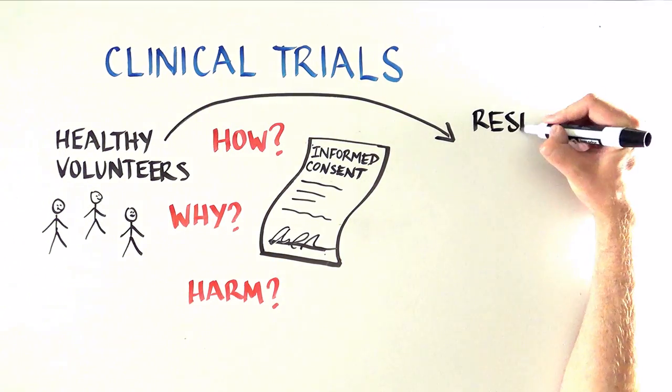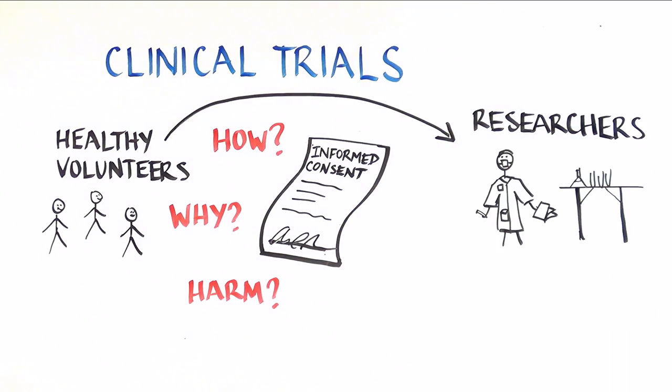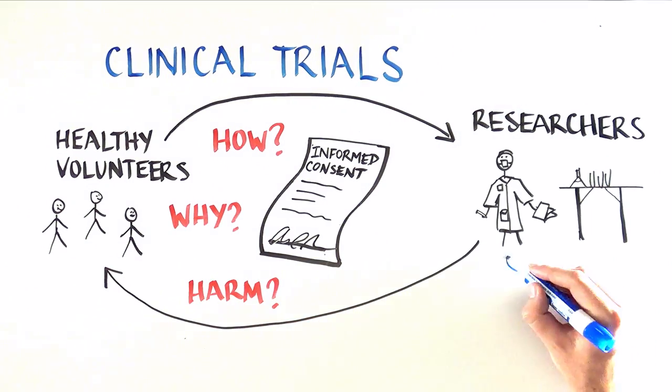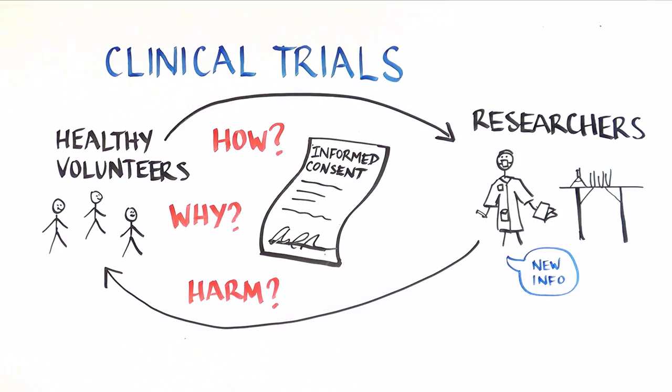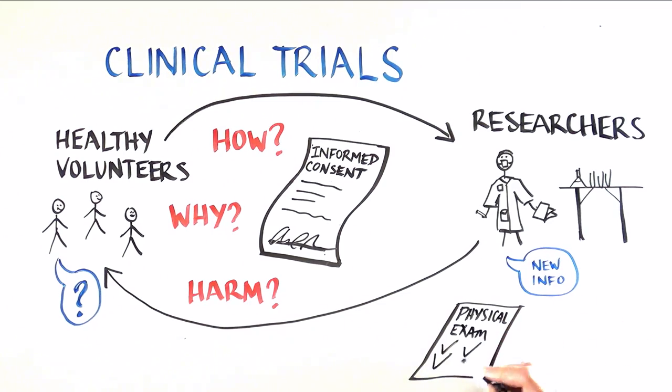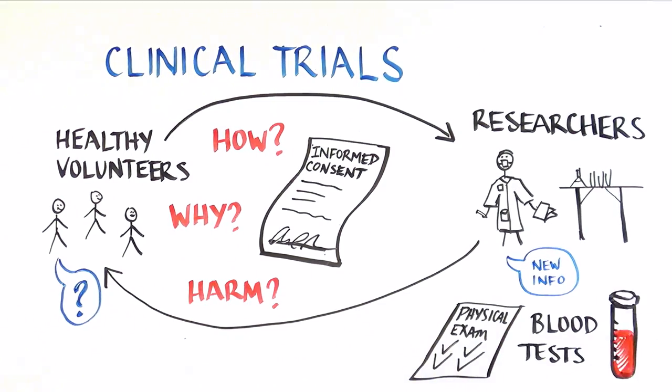This educational process is called informed consent, and goes on before and during the trial. There is continual discussion between the researchers and study volunteers, describing the study, informing volunteers about any new information during the study, and answering all questions. The study staff also determine whether the volunteer meets all eligibility criteria, which involves physical exams and blood tests.